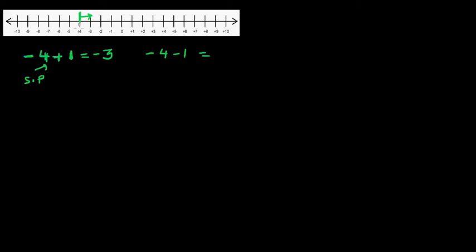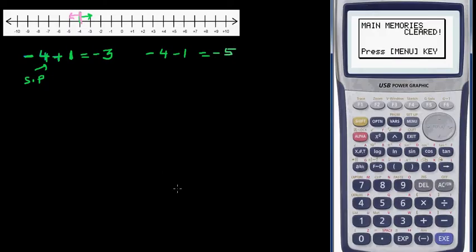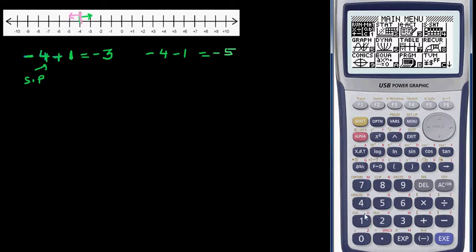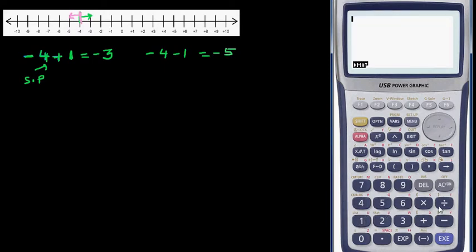You start at negative four and you're going one to the left, so your answer is negative five. Let me show this on a calculator — it's always good to check as you go. Negative four plus one is negative three and negative four take away one is negative five.